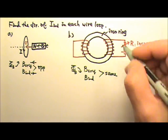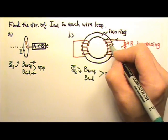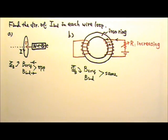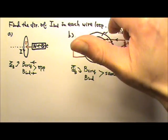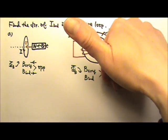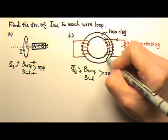The battery pushes the current out this way, so the current over here goes to the left in the front. That means if I use my thumb to follow the current, behind the current, inside the coil, the four fingers go down. That means the magnetic field inside here goes down.